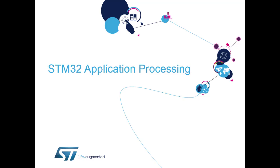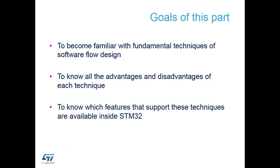We've now had our play around with writing software in assembly, which is fairly straightforward but not the easiest to follow the application flow. We now have some application processes to help you with writing the software. The goal of this section is to become familiar with some software flow designs. We're going to show you four different types of flow, their advantages and disadvantages, and what features are inside the STM32 to help with each technique.